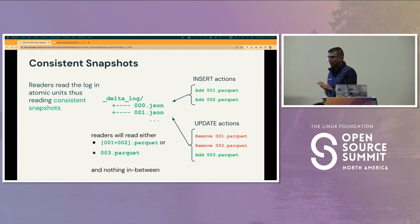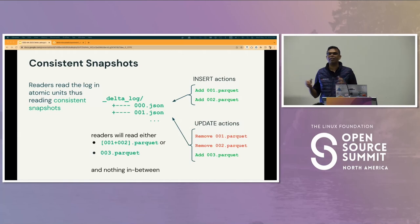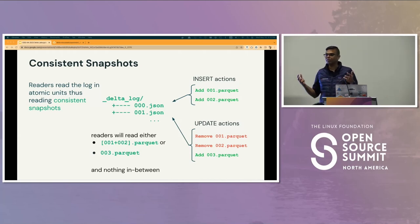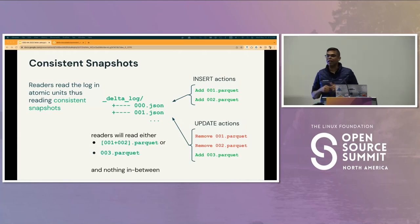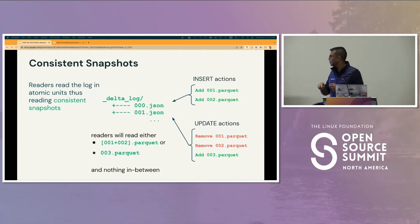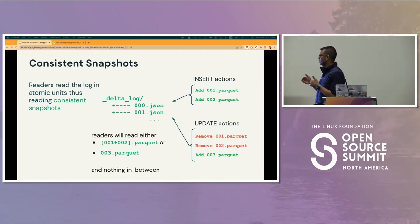The Lakehouse promises consistency and reliability, and we need consistent reads on a data lake. Imagine writing to a table while somebody else is reading it at the same time. With traditional data lakes, that would often result in inconsistent states. With Delta Lake, if an update is in progress while you're reading, you'll be reading either version zero or version one — nothing in between. You won't end up reading part of the files from one version and part from another.